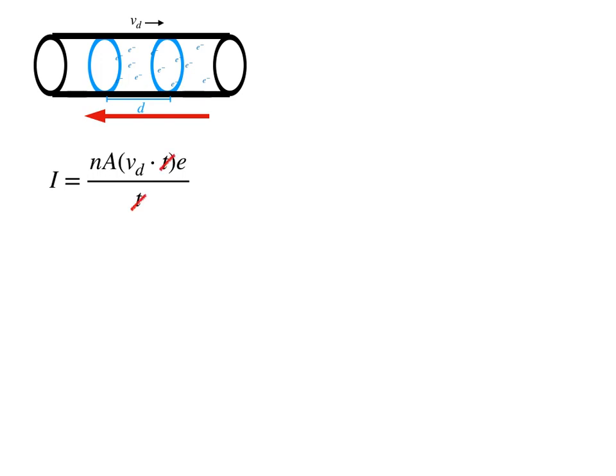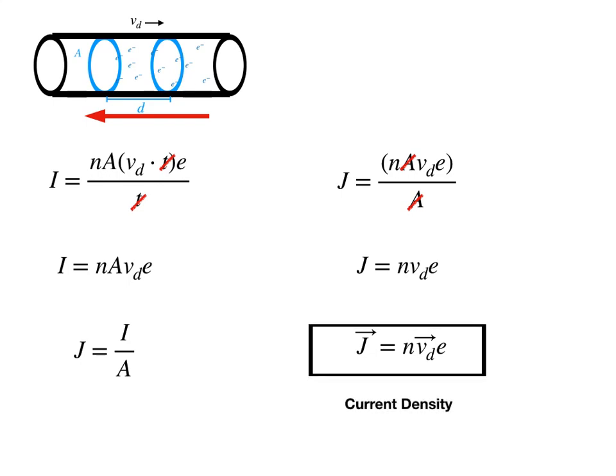We notice that the time reduces, so I'm left with this expression for current. Reviewing our definition of current density, substituting in for I, I notice that the areas reduce. And I'm left with this expression for current density. Placing the vectors back in, I get this expression, which is the formalized definition of current density.